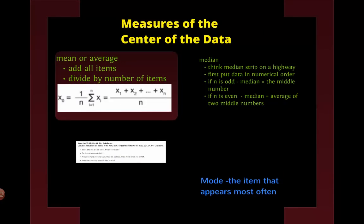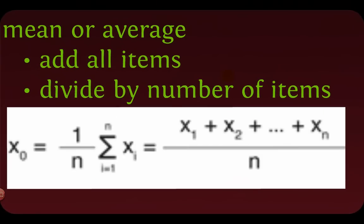The next thing is measure of center, or central tendency. There are three measures. First, the mean — we know it as the average. You add up all the items and divide by how many there are. Another way to write it is 1 over n times the sum of all the x's from i equals 1 to n. It just means add them all up and divide by how many there are.